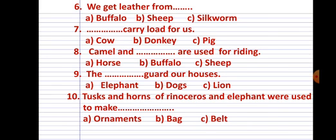Seven: _____ carry load for us. Options are a) cow, b) donkey, and c) pig. Eight: camel and _____ are used for riding. Options are a) horse, b) buffalo, and c) sheep. Nine: the _____ guard our houses. Options: a) elephant, b) dogs, c) lion.